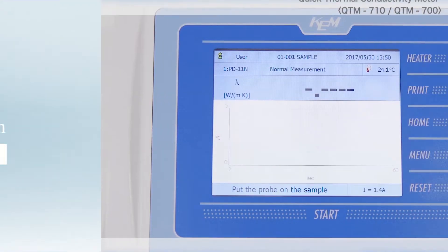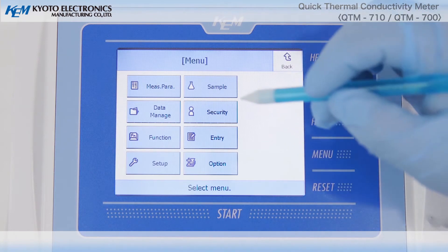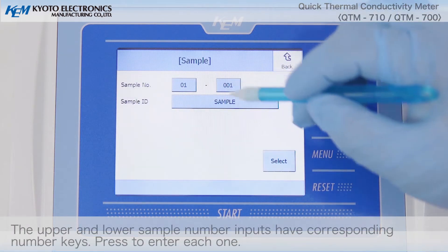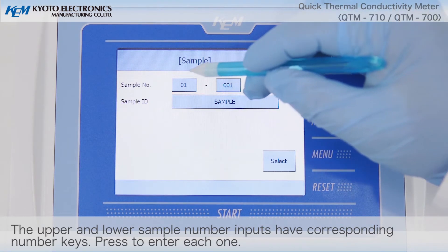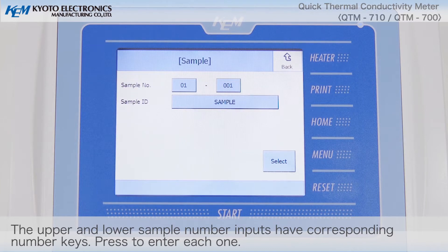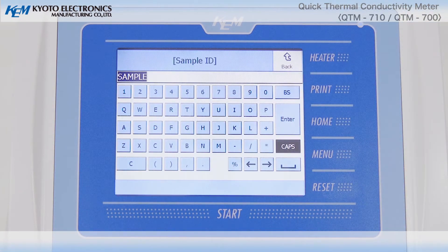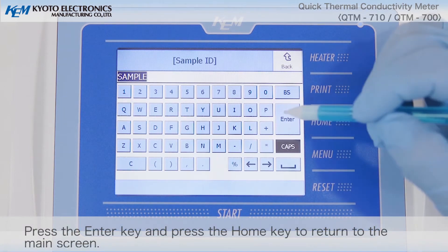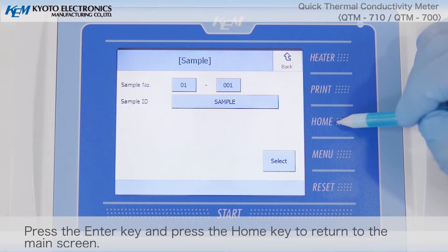Entering the sample information. Press the Menu key. Press the Sample Information key. The upper and lower sample number inputs have corresponding number keys. Press to enter each one. Press the Sample ID key and enter the sample ID. Press the Enter key and press the Home key to return to the main screen.